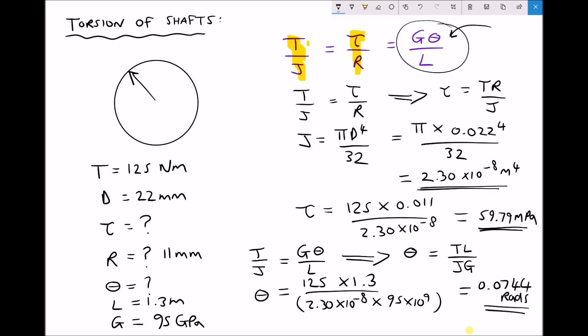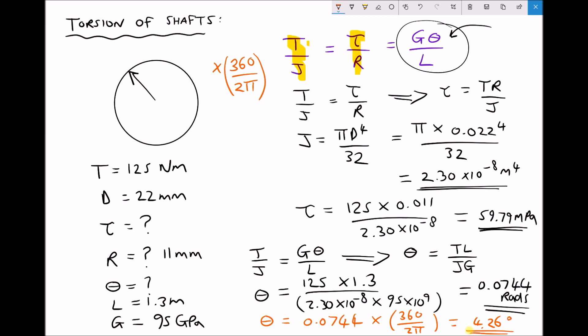If we want the angle in degrees, we need to do a conversion. The simplest way is to multiply by 360 and divide by 2π (the number of degrees and radians in a circle respectively). So θ = 0.0744 × 360 / 2π, which gives an answer in degrees equal to 4.26°. The angle of twist for that solid shaft is 4.26° when it experiences a maximum shear stress of 59.79 megapascals.